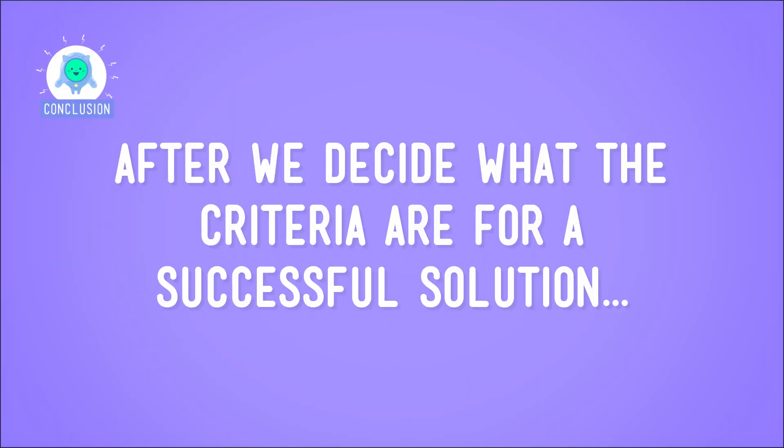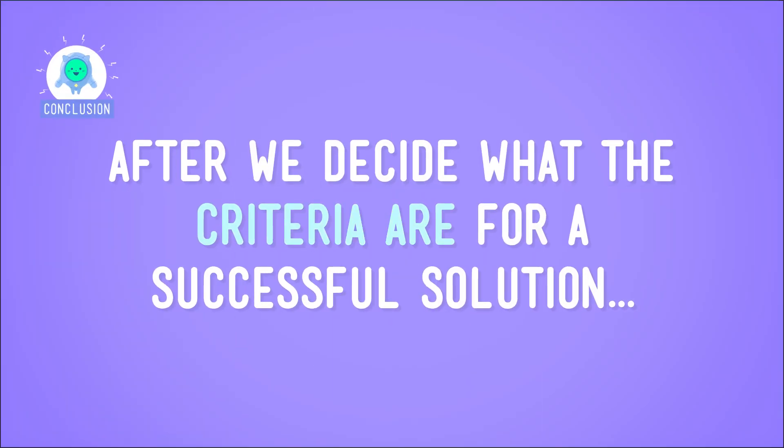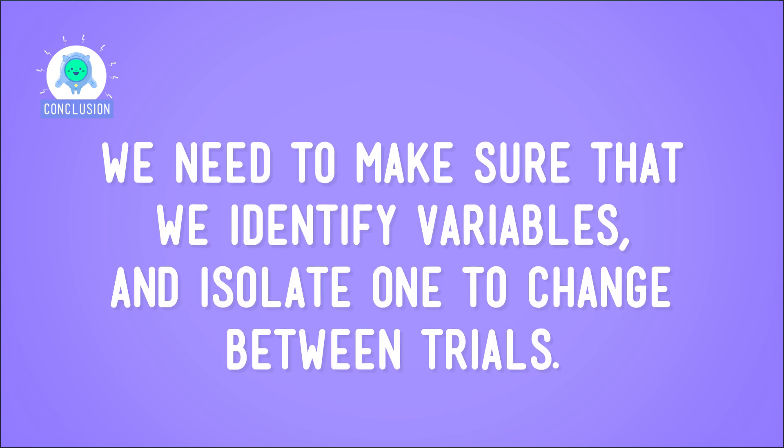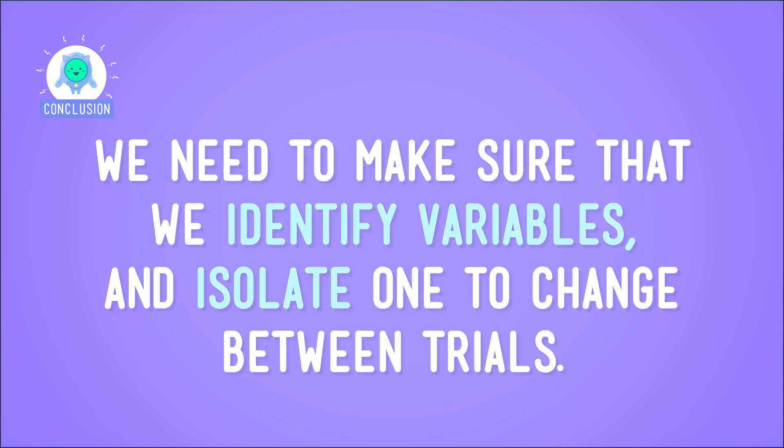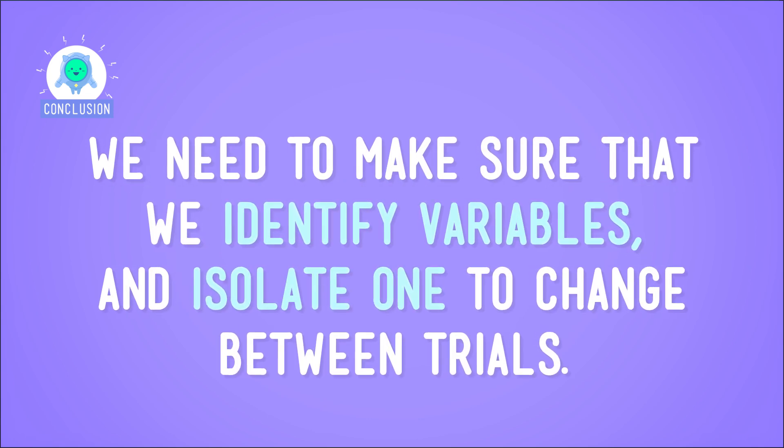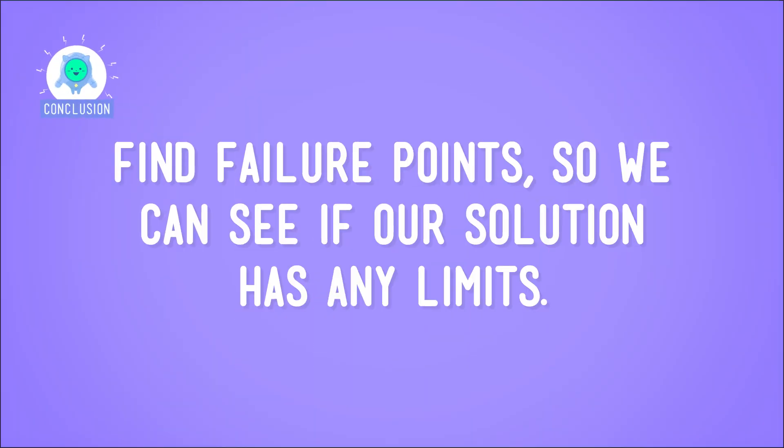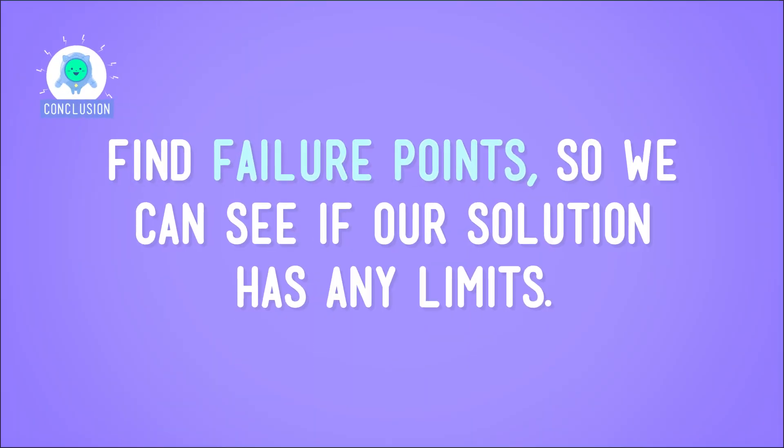So when we design a solution to meet a specific outcome, we have to make sure that we're paying attention to all of the little details. After we decide what the criteria are for a successful solution, we need to identify variables and isolate one to change between trials. And even once a trial gives us the outcome we want, we still need to try and find failure points so we can see if our solution has any limits. But what if we want to create more than one test? I'll let you toss that around in your mind until next time.